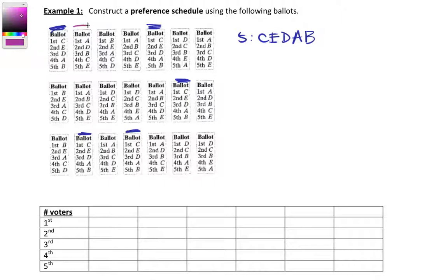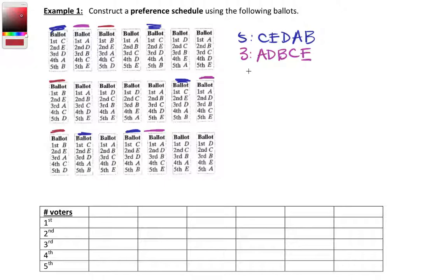Moving on to the next ranking: A, D, B, C, E. Looking through the ballots, we find three voters with that ranking. Then the next ranking is B, E, A, C, D. There are no more in the first row, but there's one in the second row, giving us three voters who ranked B, E, A, C, D. I should mention we have five candidates: A, B, C, D, and E.